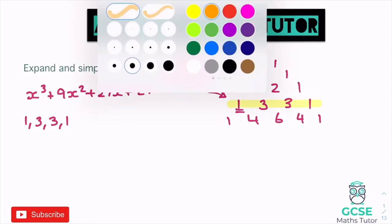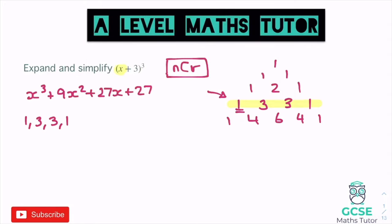Once we've got the pattern — 3C0 is one, giving us 1, 3, 3, 1 — we look at the two pieces within our bracket: x as the first one and three as the second one. The first piece gives us one lot of x to the power of three. All of these little pieces must have a total power of three in them. For the next one, we have three lots of x to the power of two — because x drops down — times three to the power of one.